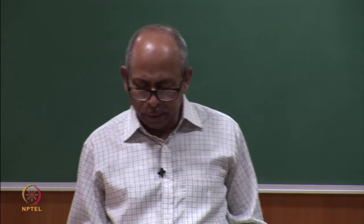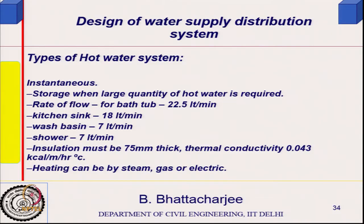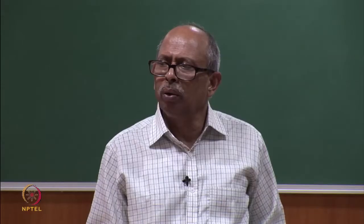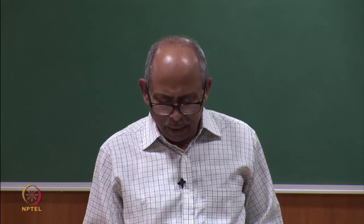We continue with the hot water supply system and the temperatures discussed earlier. Types of hot water supply systems include instantaneous systems. Storage is required when large quantities of hot water are desired. For a bath, the flow rate is around 22.5 liters per minute, for a kitchen sink 18 liters per minute, and for a wash basin — these values are given in the code. Insulation must meet thermal conductivity requirements also given in the code. Heating can be steam, gas, or electric; steam is almost gone, gas heating is very rare — it is largely electric now.